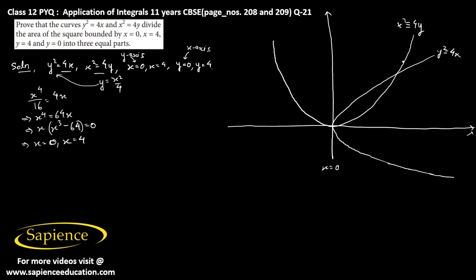From this we get x equals 0 and x equals 4. So the x-coordinate of the intersection point is 4, and the y-coordinate: y squared equals 4 times 4, so y equals 4. The intersection point is (4, 4). The straight line passing through this point is x equals 4.